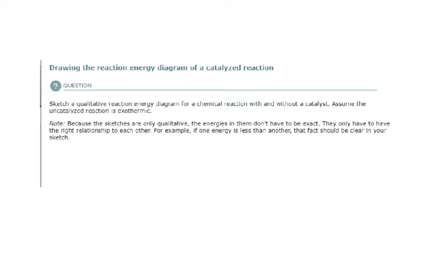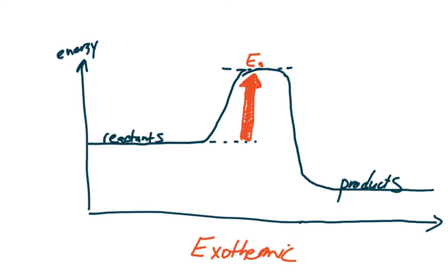So first thing we need to note that this is an exothermic reaction. That's very important. So now let's take a look at how we might sketch this. So this is what it should look like initially. This would be your uncatalyzed sketch. So what we have here, you have your y-axis, which represents the energy, and this is the progress of the reaction as it moves forward. So initially we have our reactants in some initial energy state.